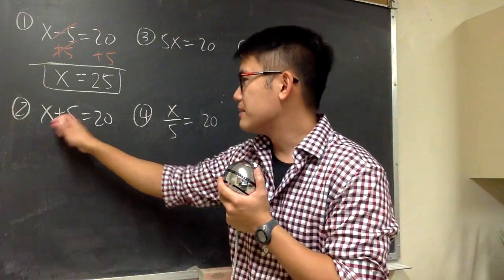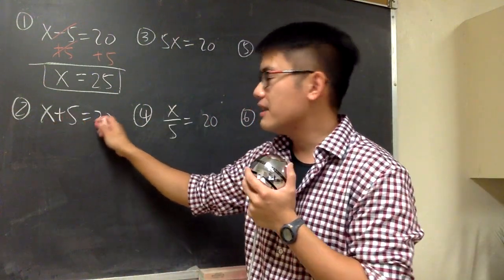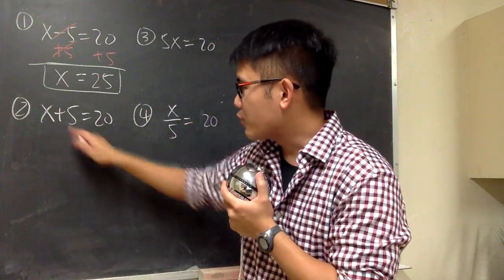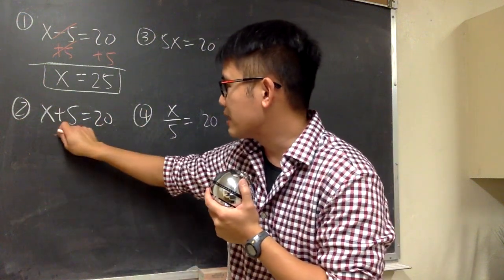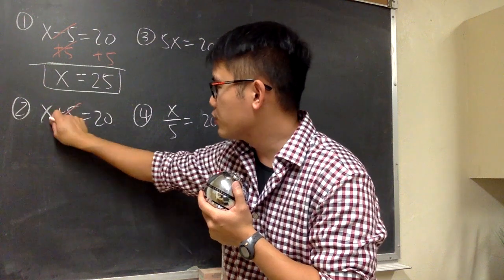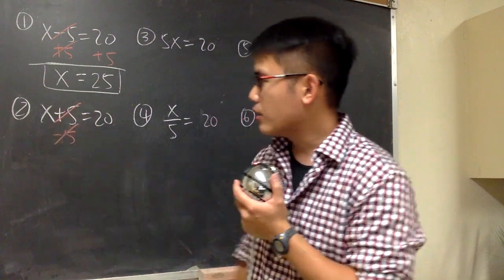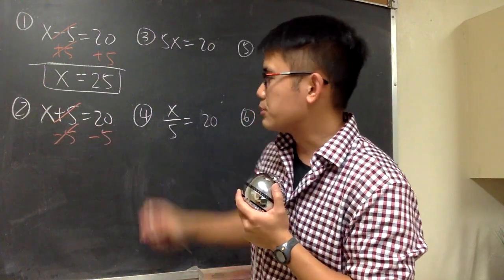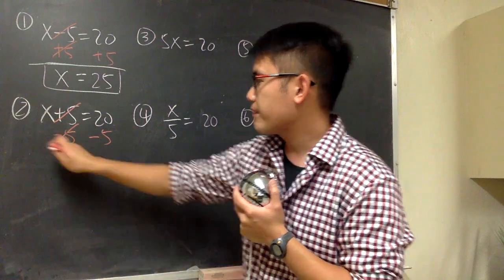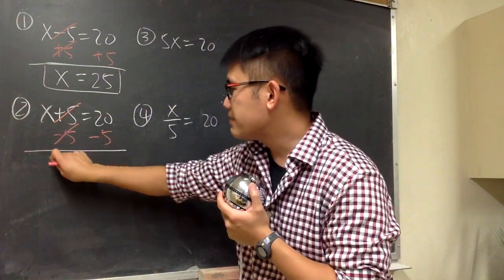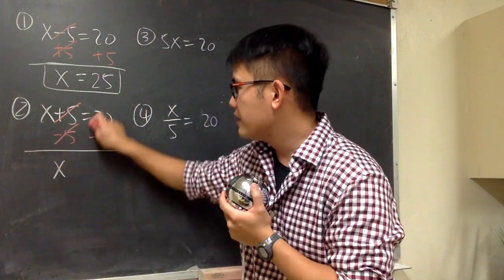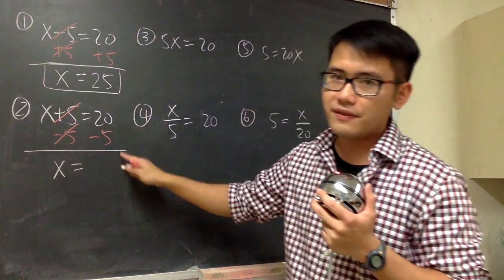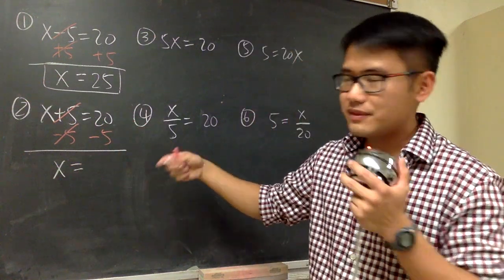Next, we have x plus 5 is equal to 20. We are adding 5 here, so we have to subtract 5. This way, this and that will cancel. We do the same thing on the other side — subtract 5. Then we have x by itself, equal to 20 minus 5, which is 15.